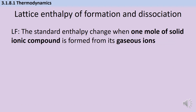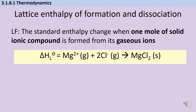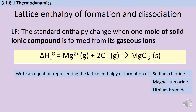Finally in this series we have lattice enthalpies of formation and dissociation — these are inverse processes of each other, just like bond enthalpy: the energy absorbed to break a bond equals the energy released when it forms. Lattice formation is the standard enthalpy change when one mole of solid ionic compound is formed from its gaseous ions — for example, Mg²⁺ and Cl⁻ ions joining to make one mole of MgCl₂ solid. Can you write an equation for the lattice enthalpy of formation of three ionic solids?